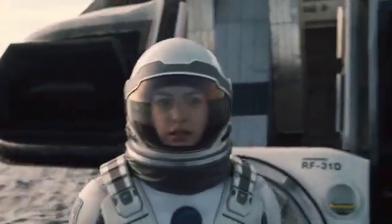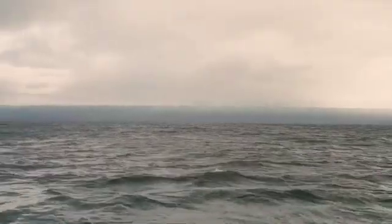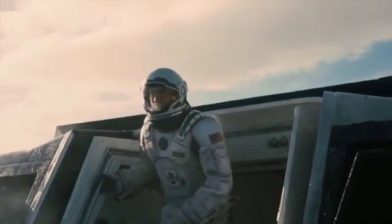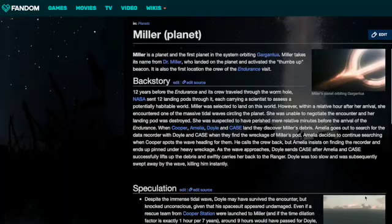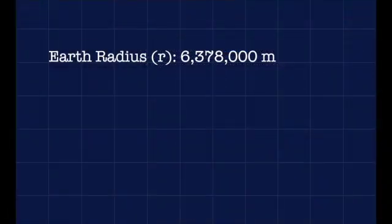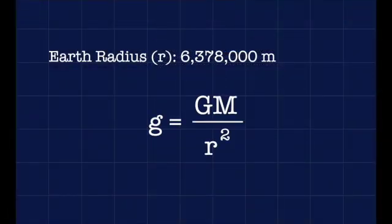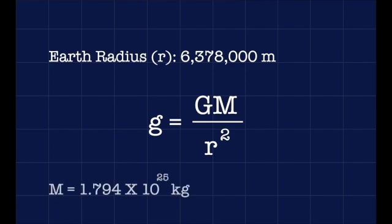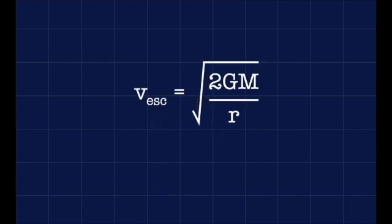Knowing that astronauts are able to walk around the planet's surface without much extra effort, we can reasonably assume acceleration due to gravity is no greater than two or three g's — let's round up to three. The Interstellar fan wiki says that Miller's planet is approximately Earth-sized. So applying Newton's equation of universal gravitation, we can solve for planetary mass and end up with a value of 1.794 times 10 to the power of 25 kilograms. From this, we can calculate the escape velocity needed to leave the gravitational influence of the planet, which comes out to 19.375 kilometers per second, or roughly 1.73 times that needed to leave Earth.